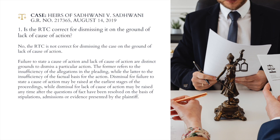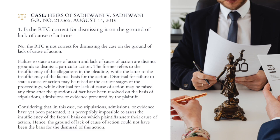Failure to state a cause of action and lack of cause of action are distinct grounds to dismiss a particular action. The former refers to the insufficiency of the allegations in the pleading, while the latter refers to the insufficiency of the factual basis for the action. Dismissal for failure to state a cause of action may be raised at the earliest stages of the proceedings, while dismissal for lack of cause of action may be raised any time after the questions of fact have been resolved on the basis of stipulations, admissions, or evidence presented by the plaintiff. Considering that in this case no stipulations, admissions, or evidence have yet been presented, it is perceptibly impossible to assess the insufficiency of the factual basis on which plaintiffs assert their cause of action. Hence, the ground of lack of cause of action could not have been the basis for the dismissal of this action.